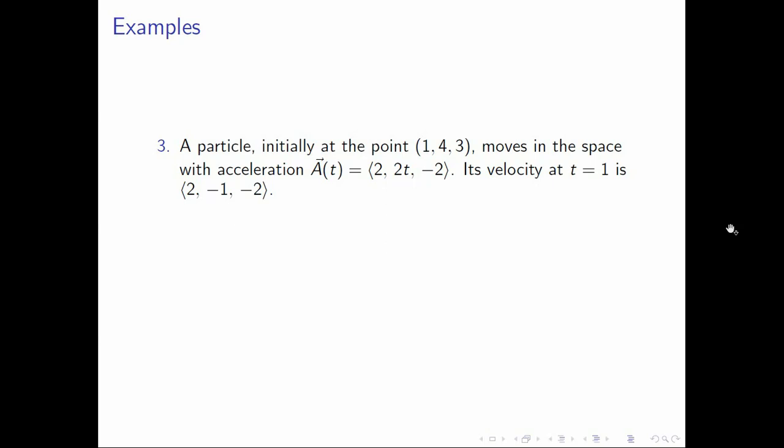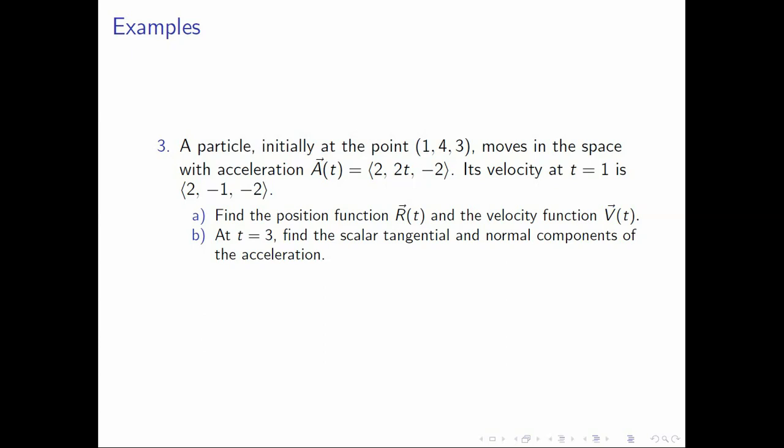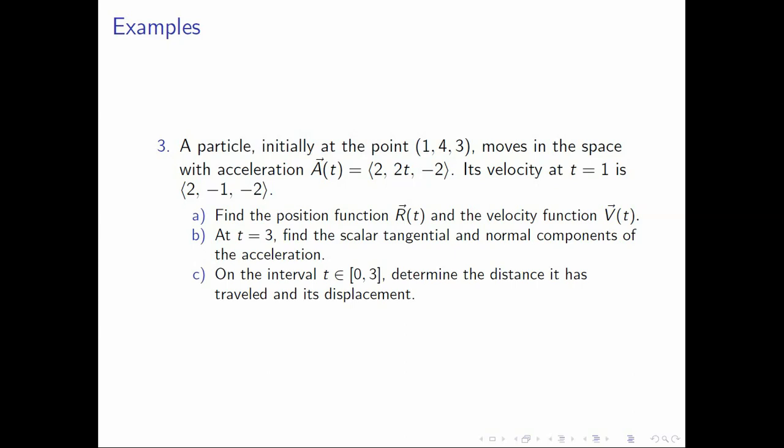Let us do item number 3. A particle initially at the point (1,4,3) moves in space with acceleration a(t) = (2, t, -2). Its velocity at t=1 is the vector (2, -1, -2). For letter A, find the position function and the velocity function. For letter B, find the scalar tangential and normal components of the acceleration when t=3. And for letter C, determine the distance the particle has traveled and its displacement on the interval 0 to 3.